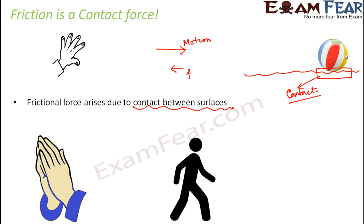Take another example: when we walk. Do you think friction plays a role when we walk? Yes, of course. Because when we walk, motion is involved, and whenever there is motion, there is a force of friction acting to oppose our motion. But still we are able to walk — because we are able to overcome the force of friction. You might be thinking that friction is like a villain, always trying to oppose the movement when we want to walk and move.